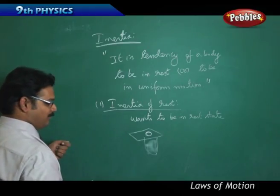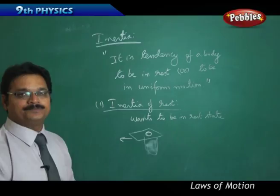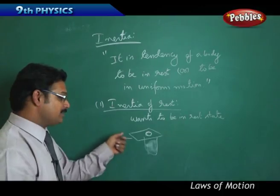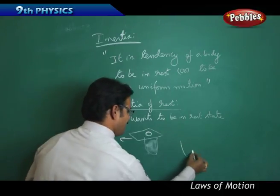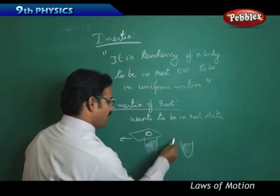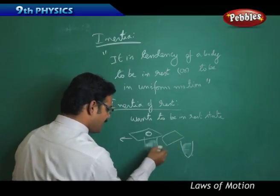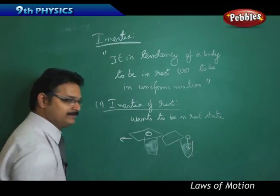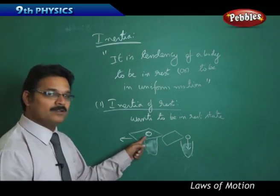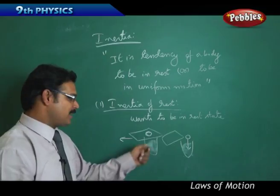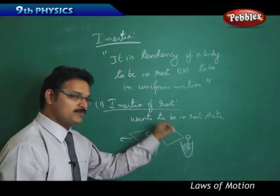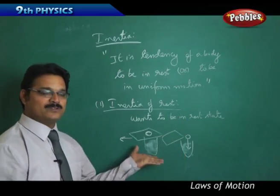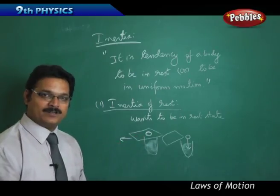Now pull the cardboard suddenly — not slowly, but suddenly. The cardboard moves in the pulling direction, but the coin falls into the water. Why? Because the coin wants to remain in its rest state. As soon as the cardboard is pulled, the coin stays in the same location and then falls into the water. This is the best example for inertia of rest.